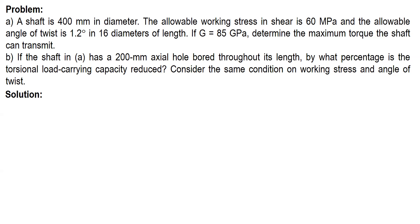In this video, I'm going to solve another sample problem about torsion. Here's the problem. Letter A: a shaft is 400 millimeters in diameter. The allowable working stress in shear is 60 megapascal, and the allowable angle of twist is 1.2 degrees in 16 diameters of length. If the modulus of rigidity G is equal to 85 gigapascal, determine the maximum torque the shaft can transmit.